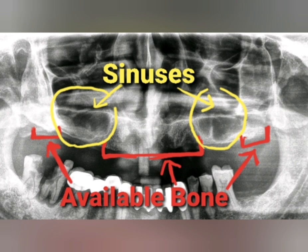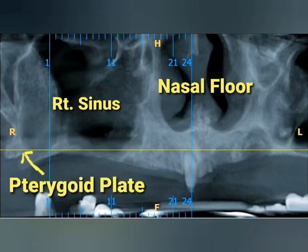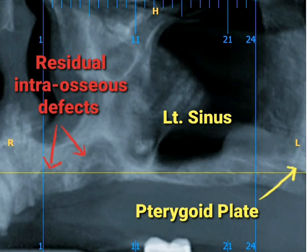In this same radiograph, the yellow circles are showing the right and left maxillary sinuses, which are large, and the red markings indicate the available bone for the implant. This is the CBCT of the same patient, in which the right maxillary sinus, as we can see, is huge up to the crest level. The arrow is presenting the right pterygoid plate, and below the nasal floor we have a little bit of bone for implant placement.